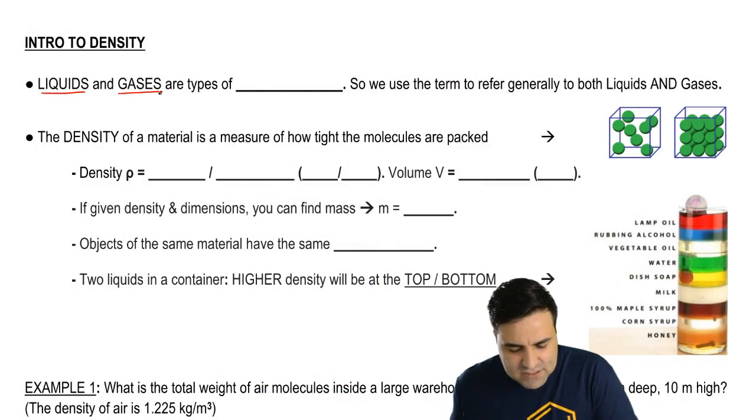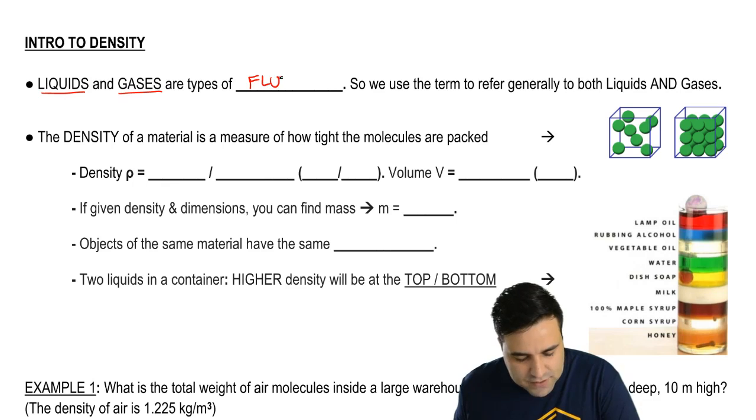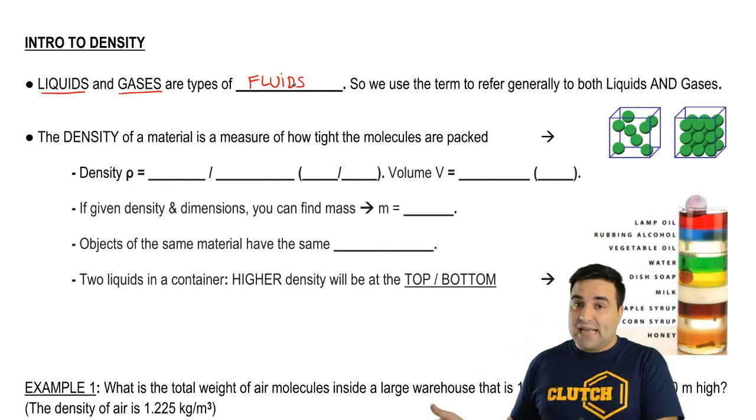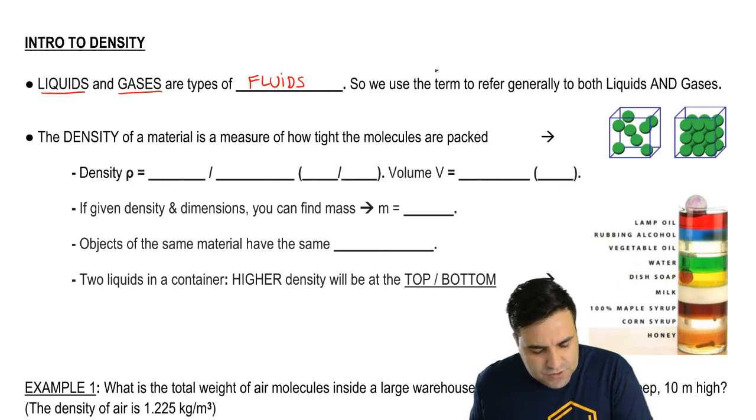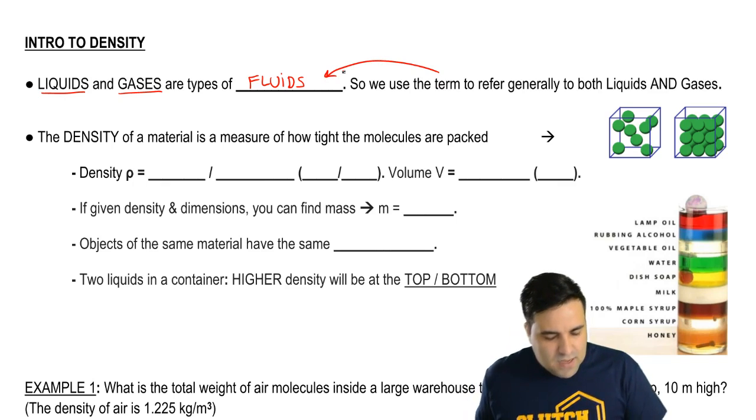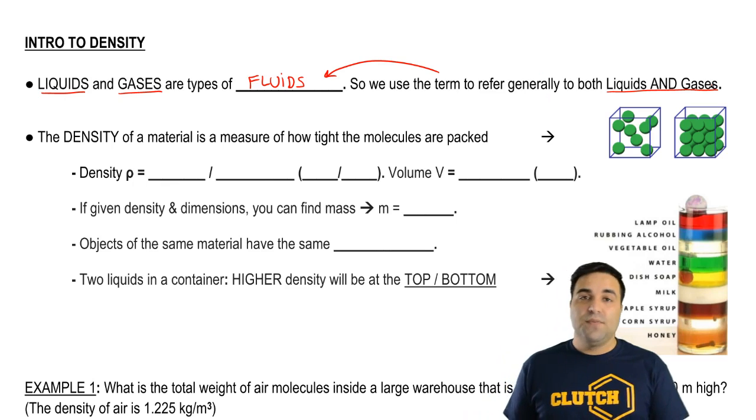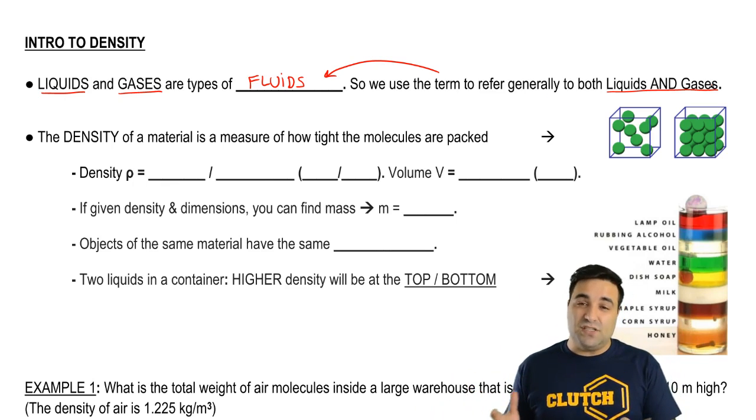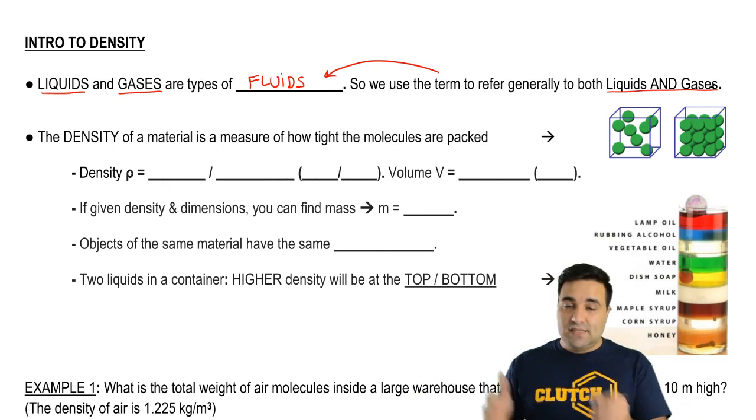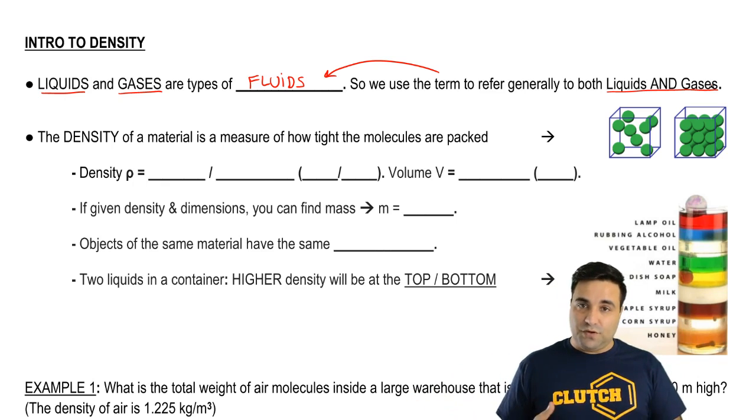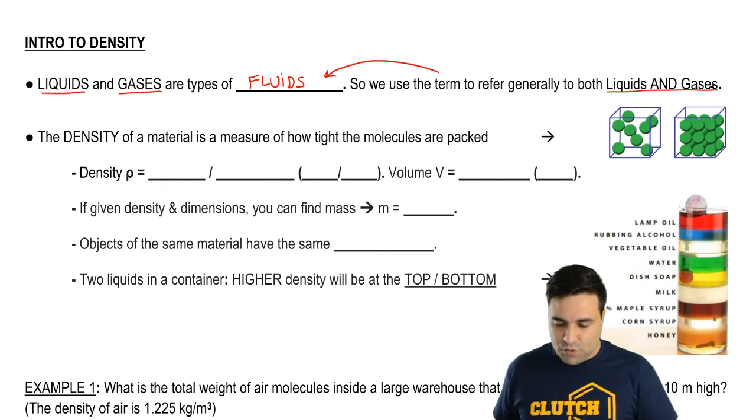Liquids and gases are types of fluids. So a liquid is a fluid and a gas is a fluid. So we're going to use the term fluids to refer generally to both liquids and gases. And the reason we do this is because liquids and gases behave very similarly in a lot of different situations. So instead of saying liquids and gases all the time, we're just going to say fluids, which refers to both things.